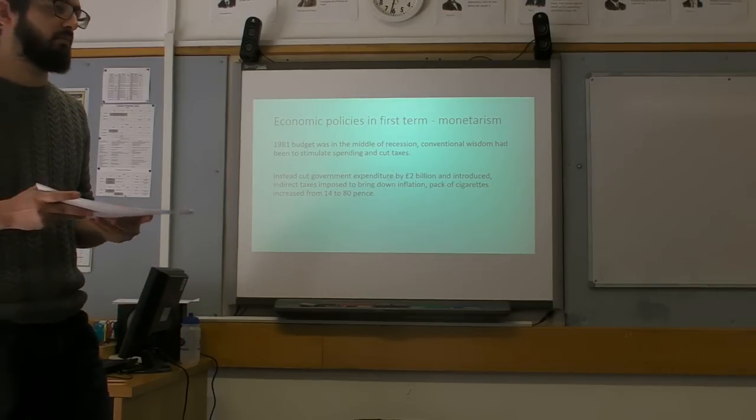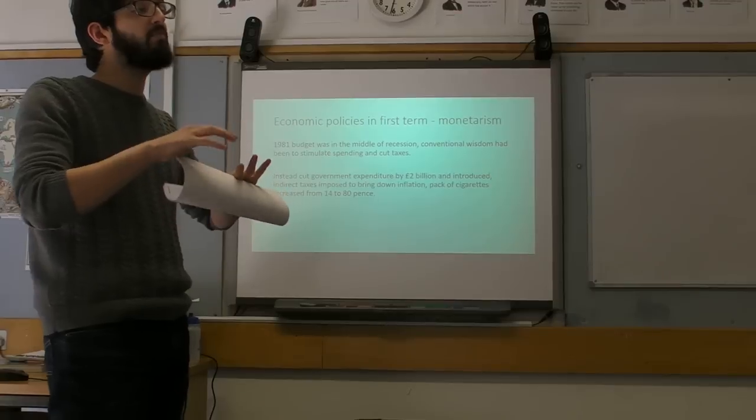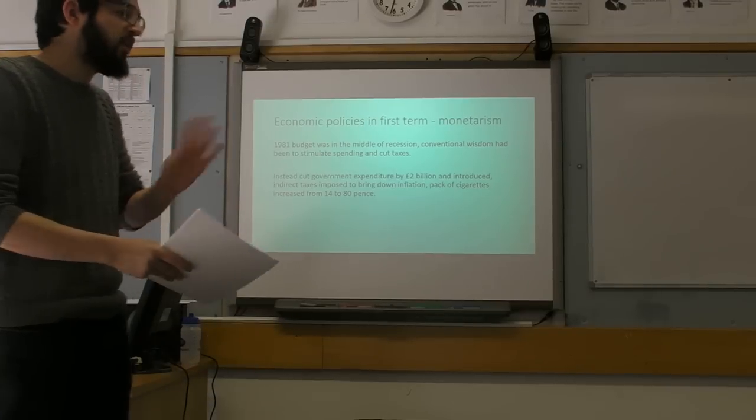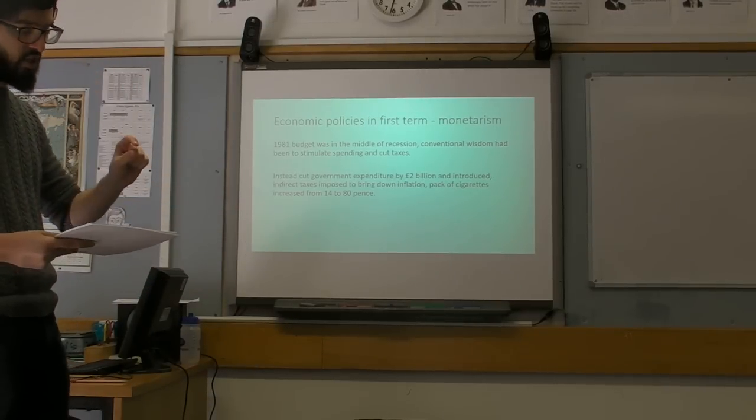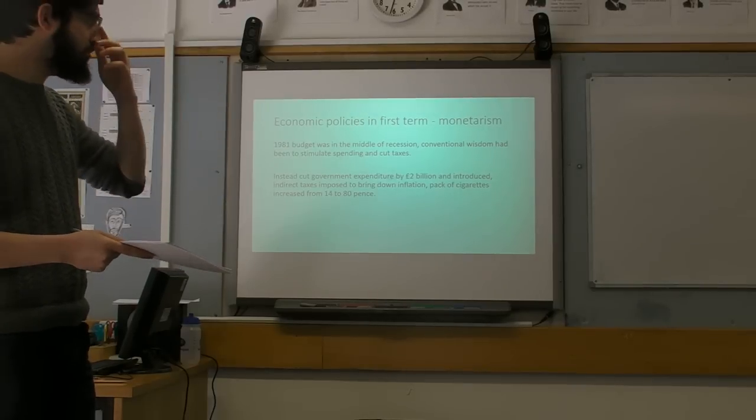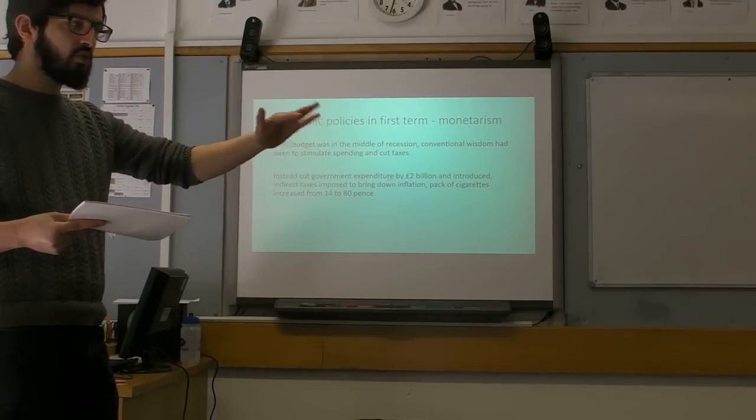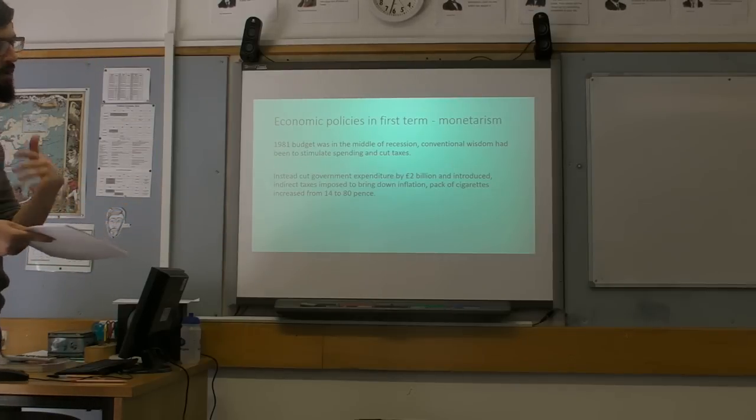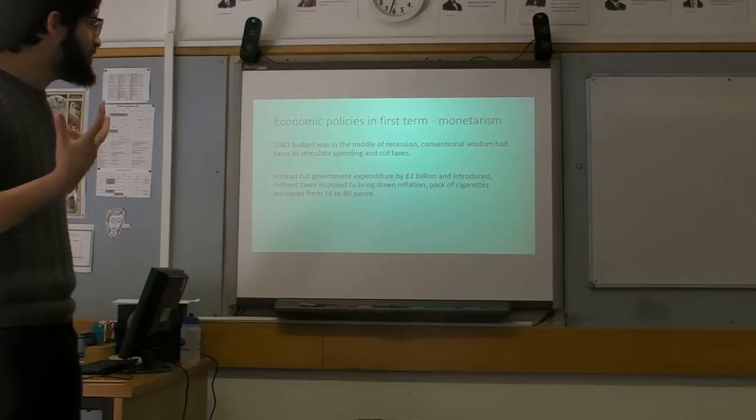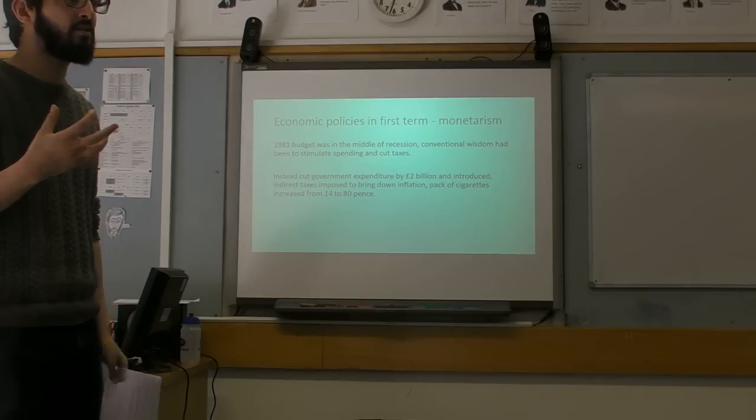People wanted her to do this, and people were trying to pressure her to spend money to stimulate the economy. She basically outright refused. And so her 81 budget did the exact opposite. Instead, she cut public spending by £2 billion and introduces some indirect taxes to try and reduce spending to bring down inflation. The pack of cigarettes goes up from 14 pence to 80 pence.